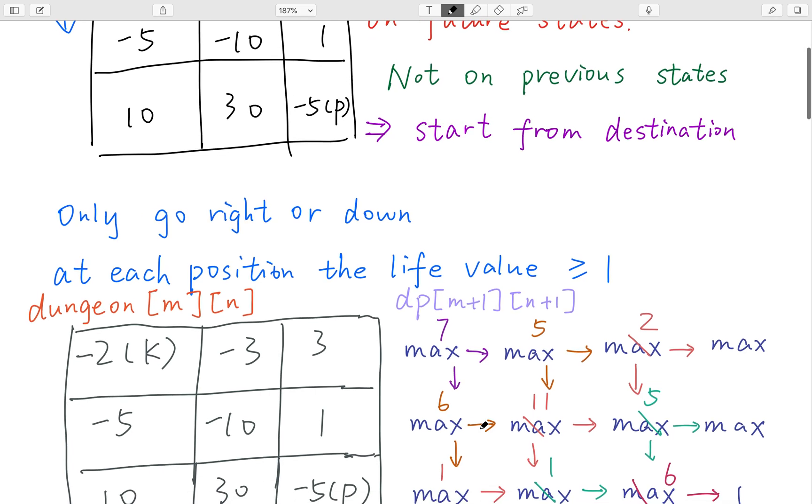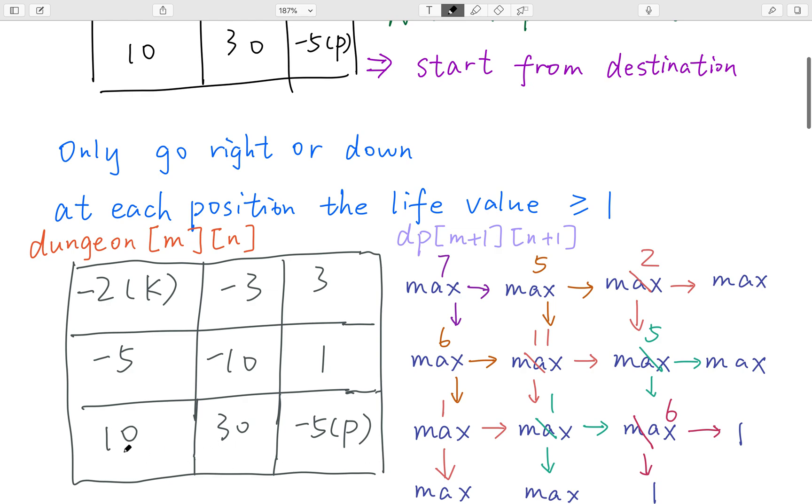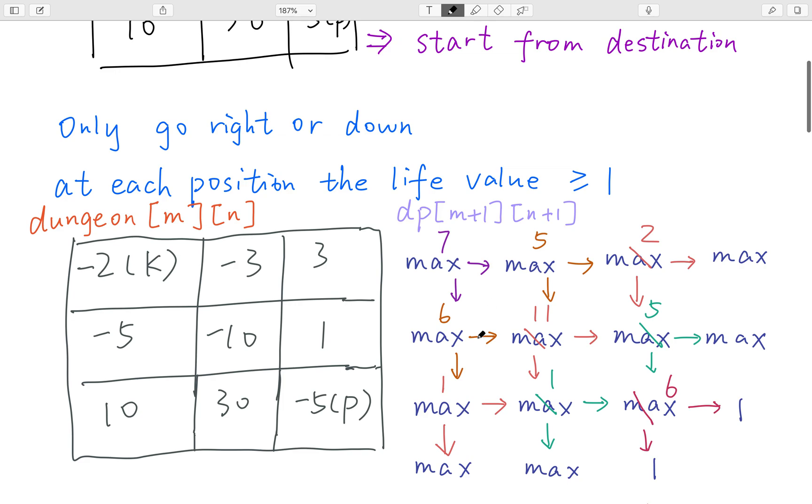The reason is that if we do not use the plus 1, we use the same size as the dungeon. Then if we add the last row or the last column, we need to specify these cases. But if we use one more, we do not need to think in those specific cases. We just need a general formula. That's the reason.